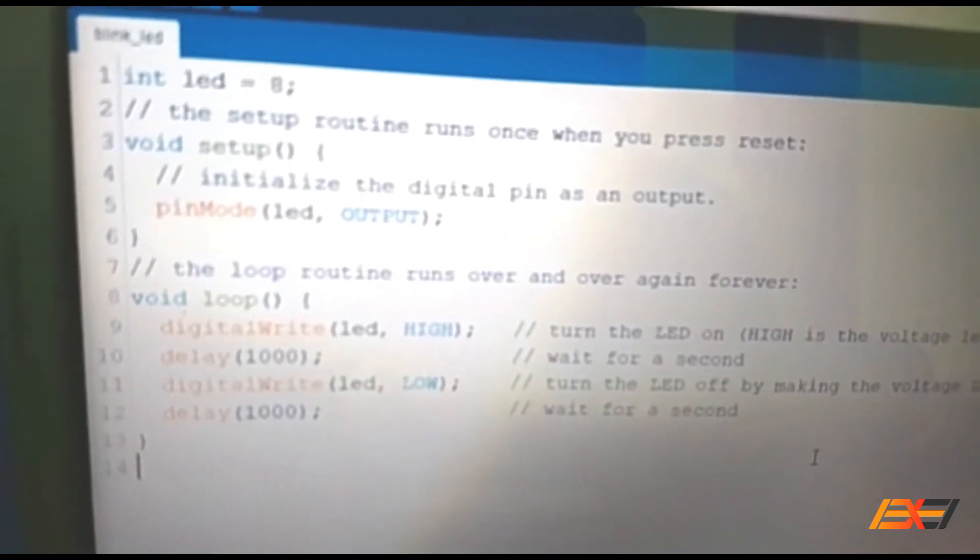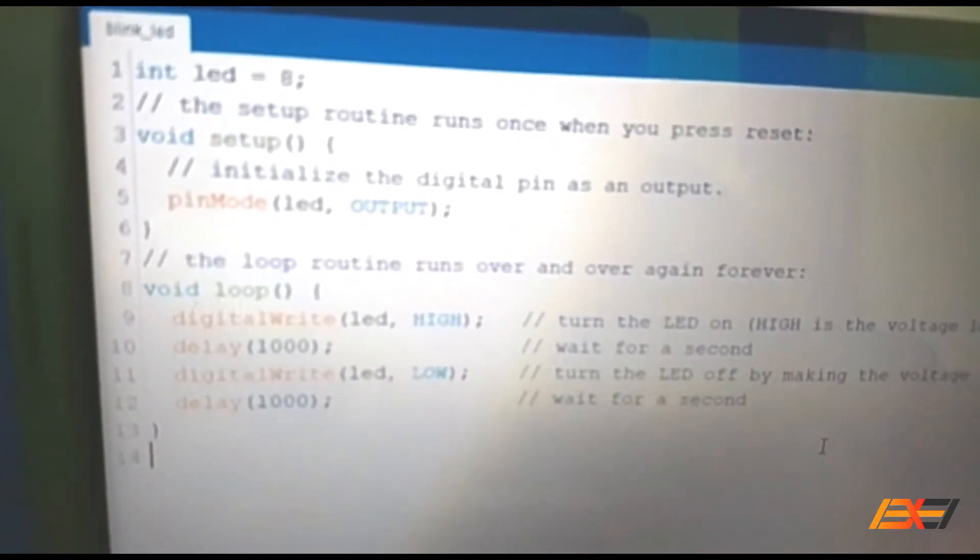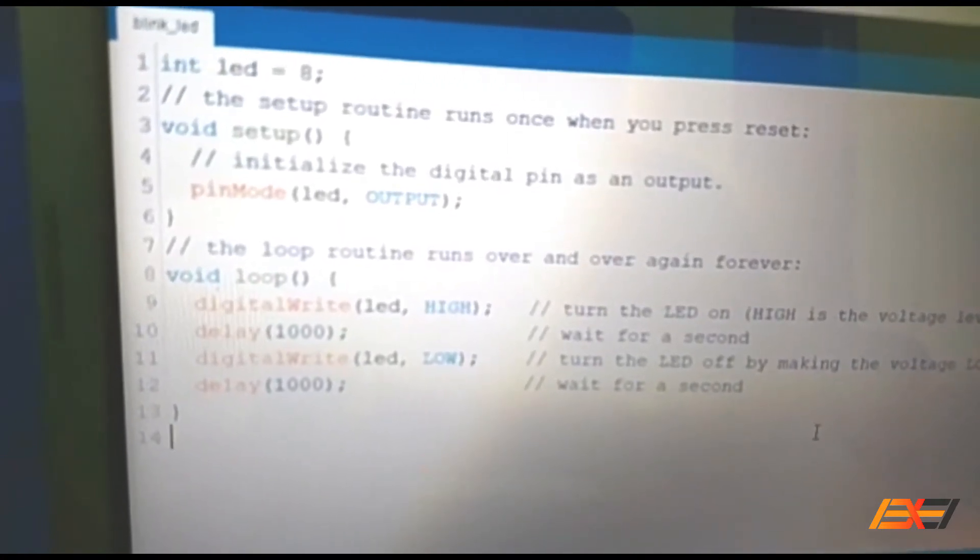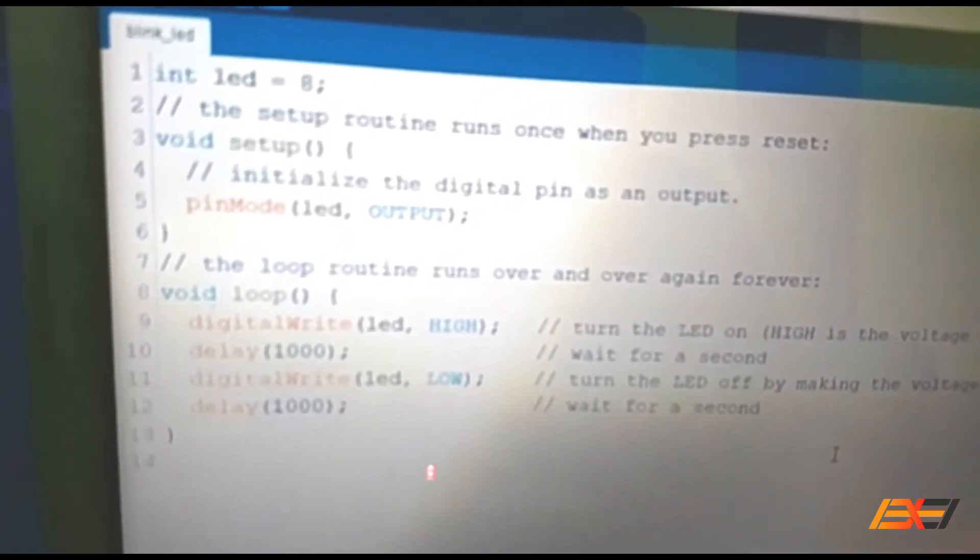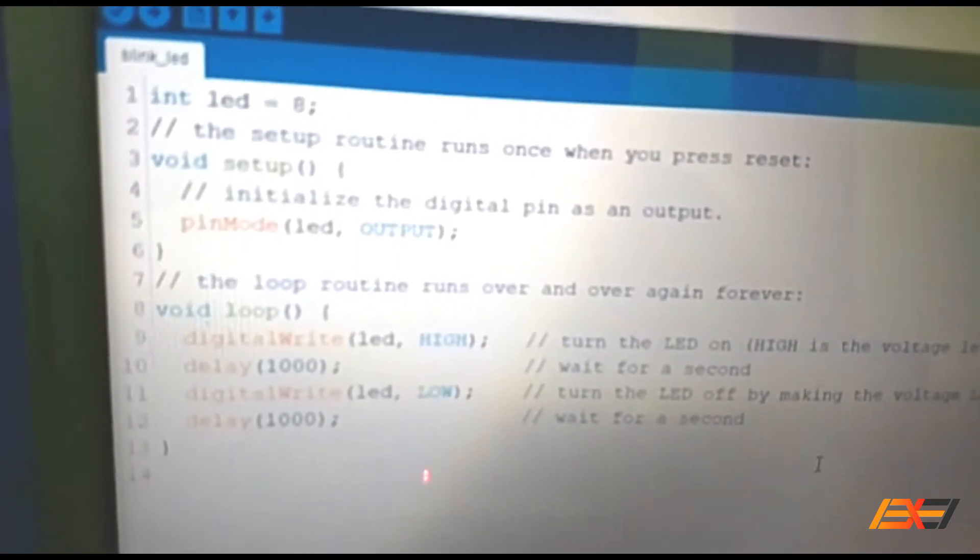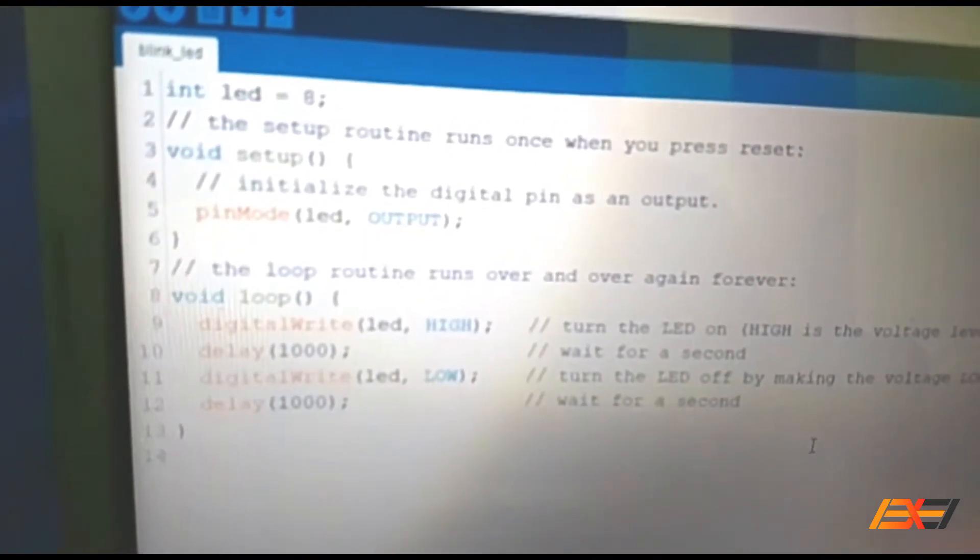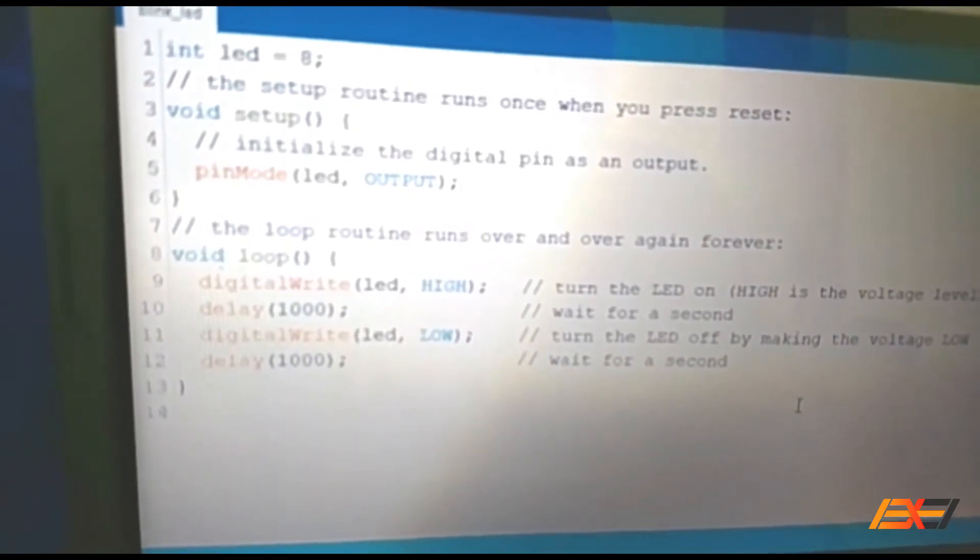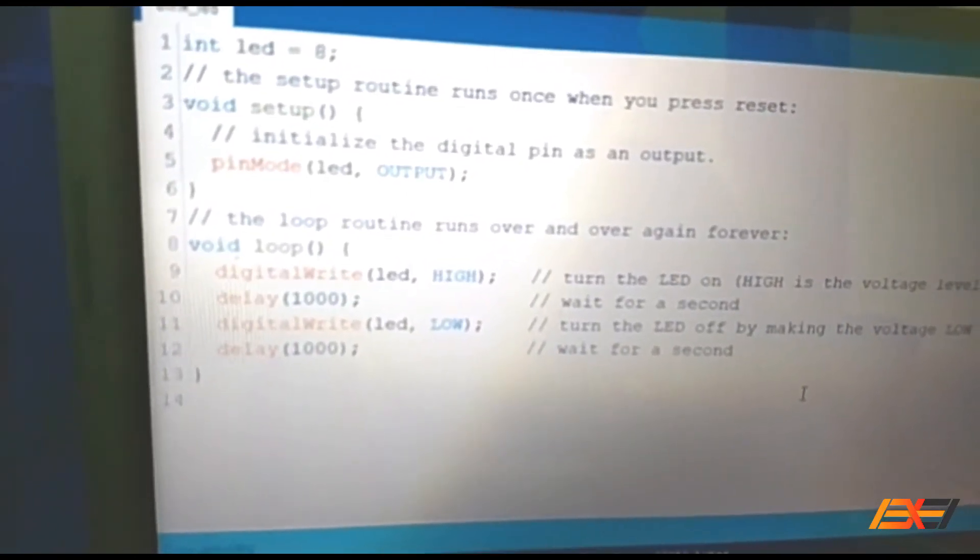Then comes the loop. Here we define digitalWrite LED HIGH, which means the LED will glow, then delay for one second. Then digitalWrite LED LOW, which means the LED will not glow, then another delay. This loop will run continuously until we stop it.